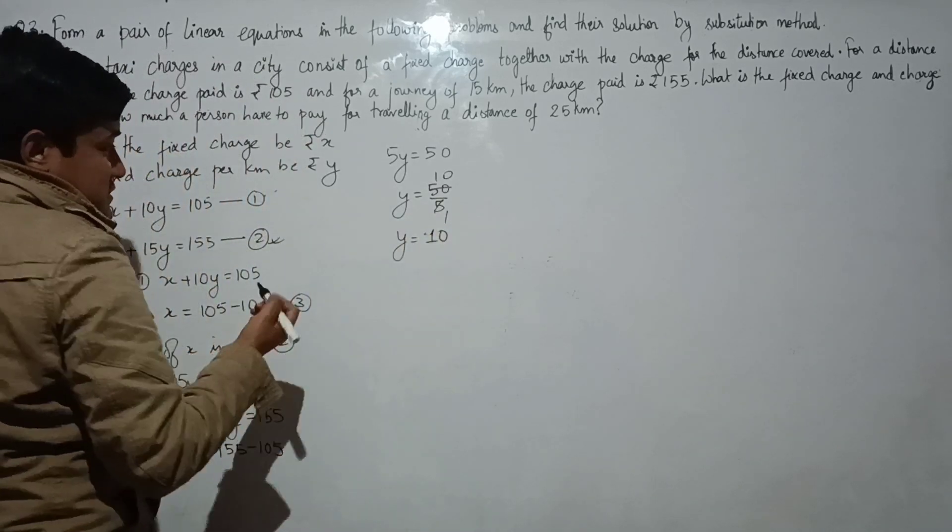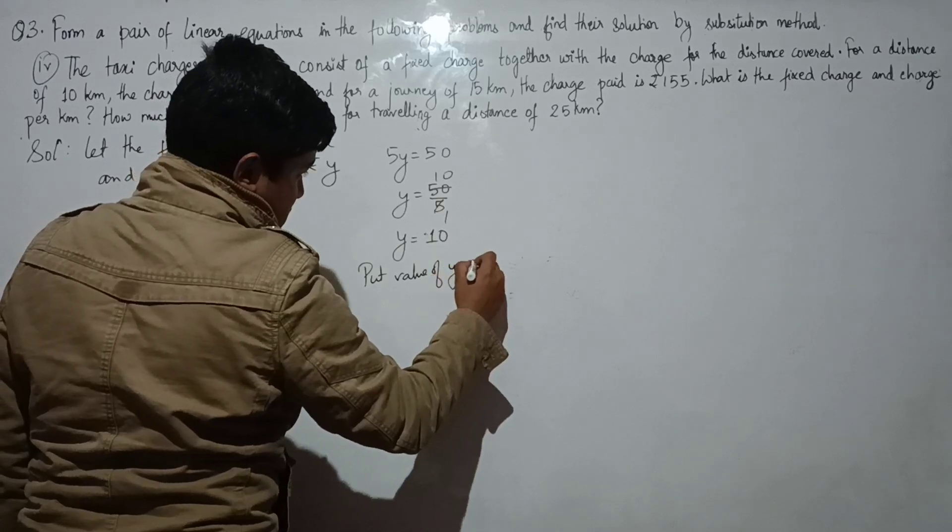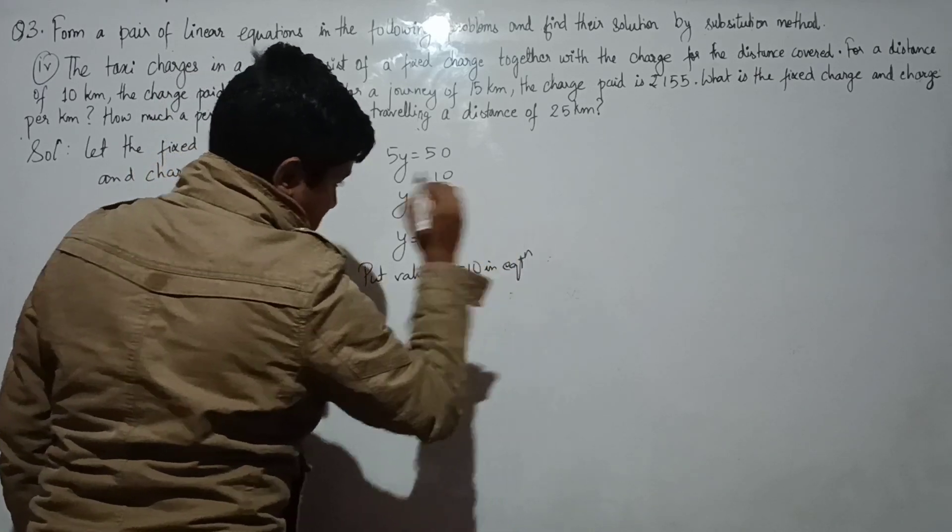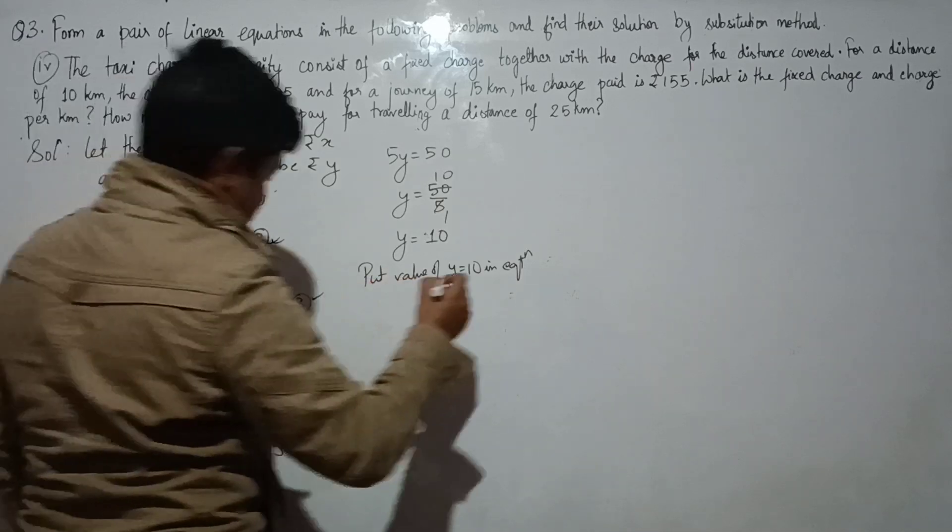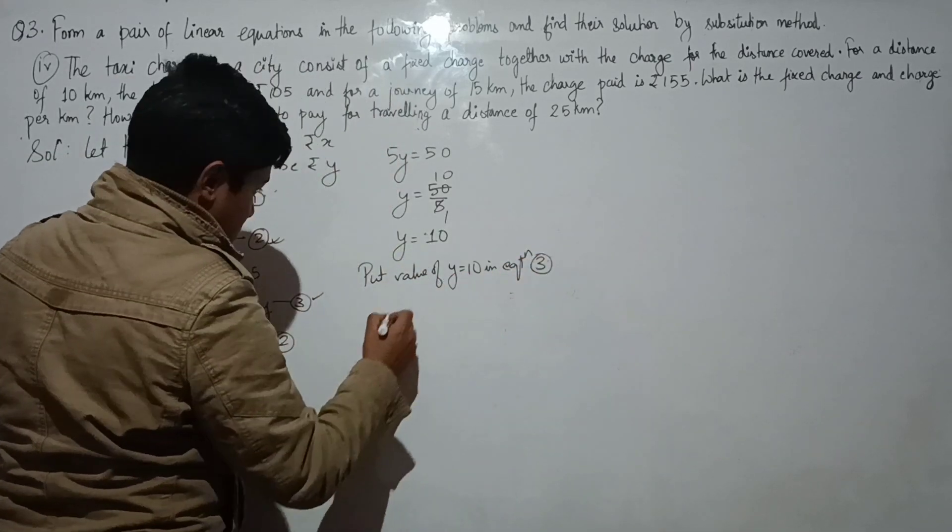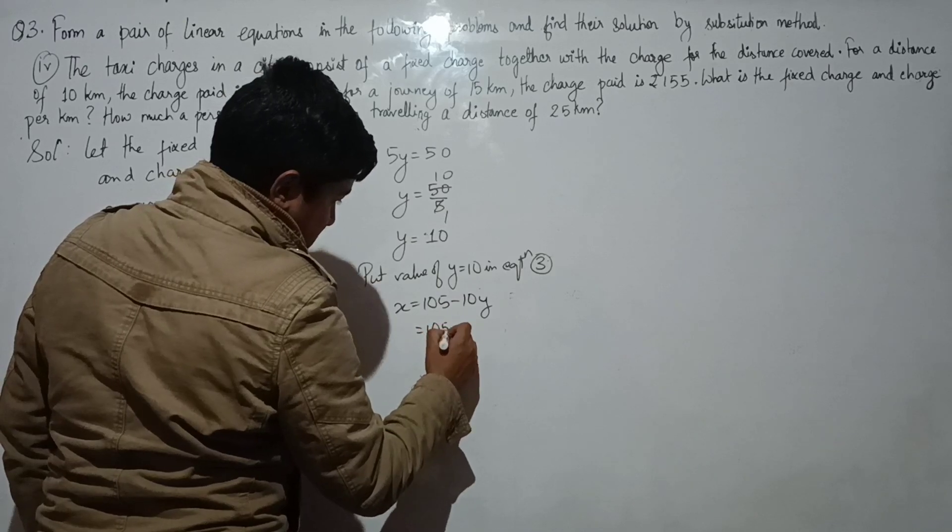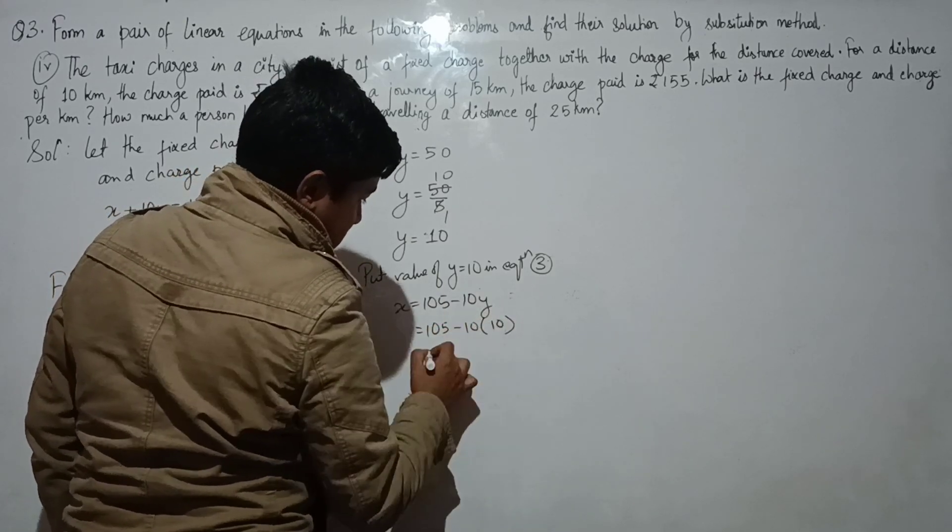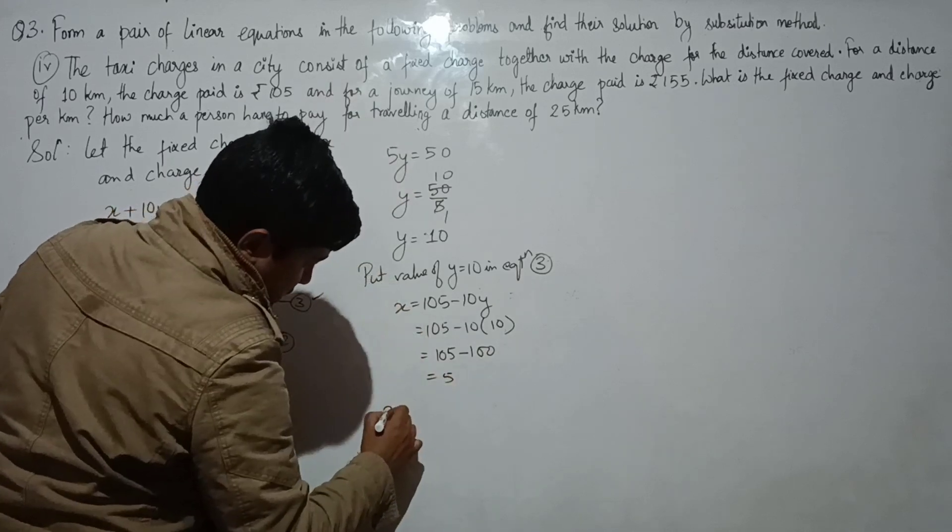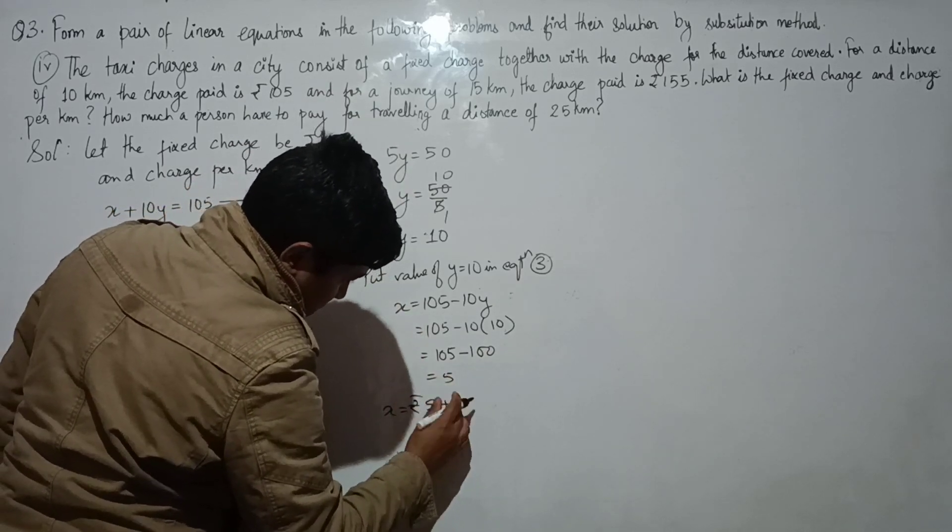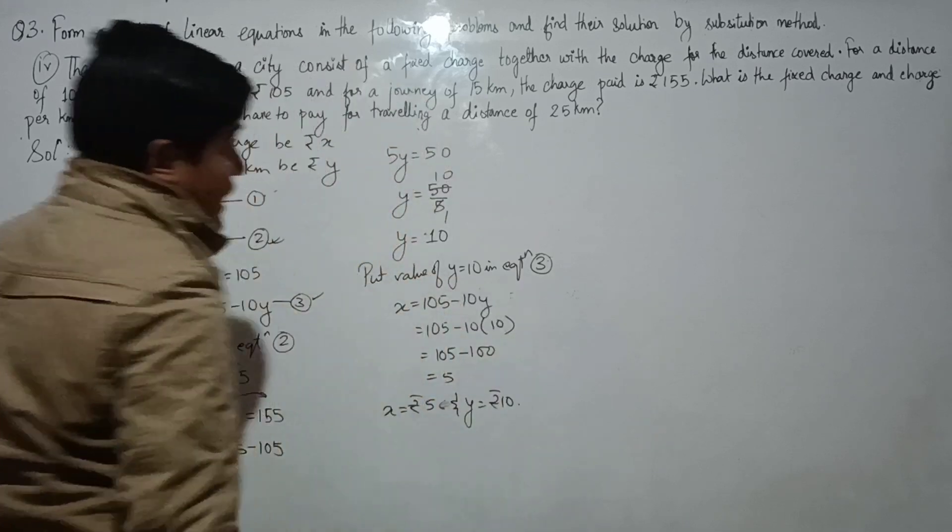Put value of y equals to 10 in equation 3. x equals to 105 minus 10 into y, so 105 minus 10 into 10 equals 105 minus 100 equals 5. So fixed charge is Rs. 5 and charge per kilometer is Rs. 10.